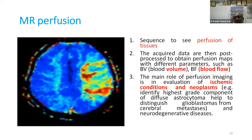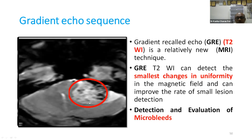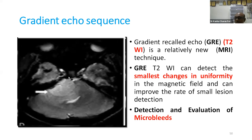MR perfusion sequence is important when new angiogenesis occurs in high-grade tumors. It helps differentiate necrosis from recurrence and progression — perfusion study shows color-differentiated areas indicating malignancy and vascularity. Gradient echo sequence shows a blooming effect in schwannomas due to microcysts and bleeds, while meningiomas do not show this blooming effect, helping differentiate CP angle tumors.